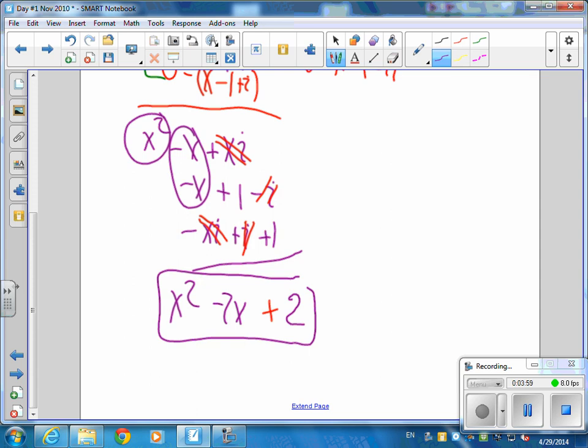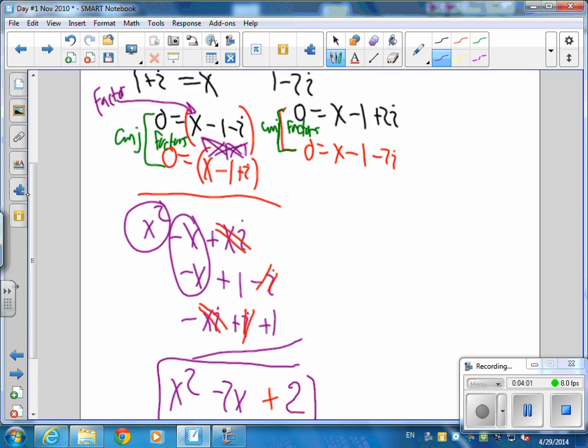And you can find the product of the other two the same way. Do you mind if I show you the shortcut? Let's do x times x is x squared, x times negative 1, there's two of them, so it will be minus 2x.